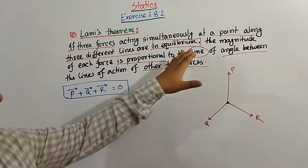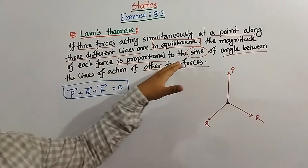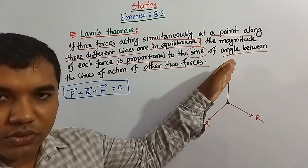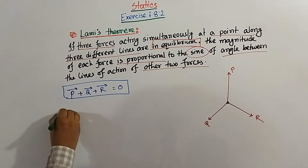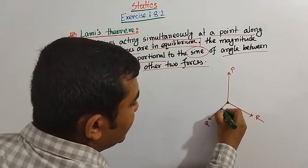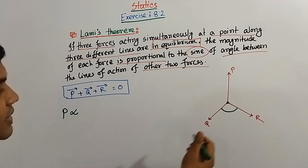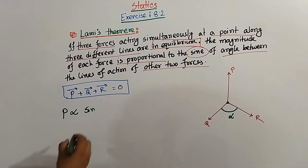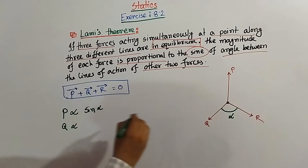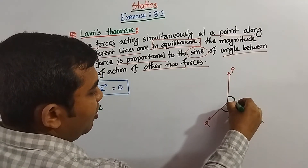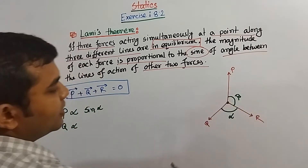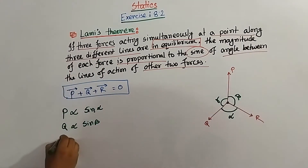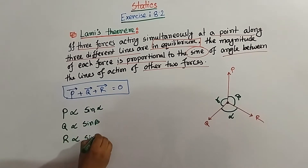If this, then the magnitude of each force is proportional to the sine of the angle between the lines of action of the other two forces — that means the opposite two forces. This force should be proportional to sine of the opposite angle. Say the angle here is alpha. Then Q will be proportional to sine of its opposite angle, say beta. And R is proportional to sine of its opposite angle, say gamma.